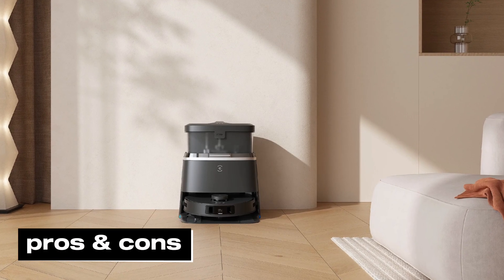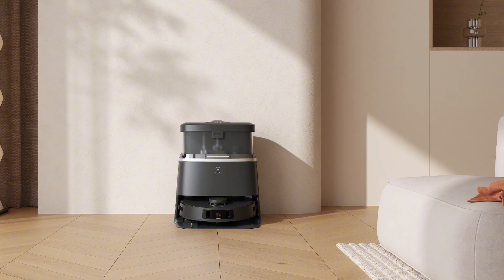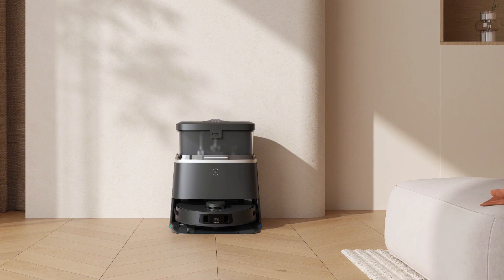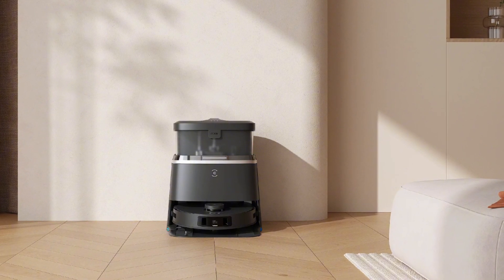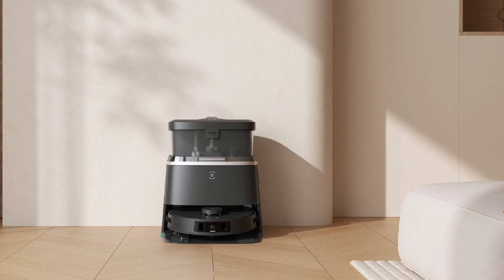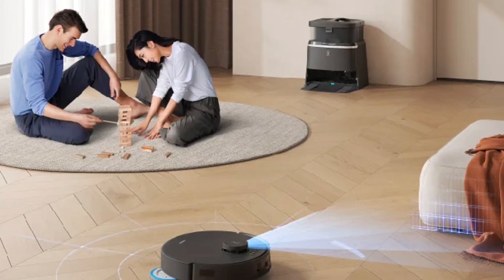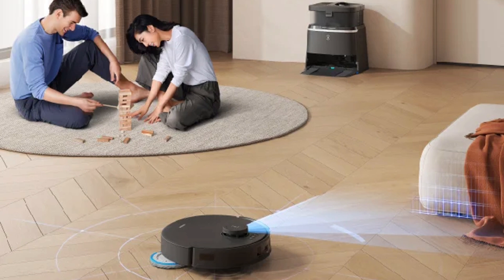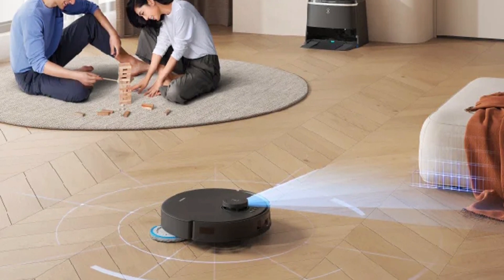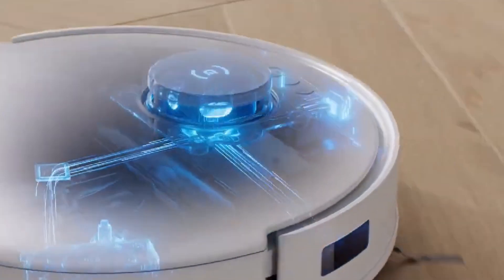Pros and Cons: As with any product, the Ecovacs D-Bot T30 robot vacuum has its share of pros and cons that are worth considering before making a purchase. On the positive side, its sleek and compact design allows it to effortlessly navigate under furniture and into tight spaces, making it an attractive addition to any home. The advanced navigation and mapping capabilities ensure that it cleans efficiently by systematically covering the entire area without missing spots. Additionally, the D-Bot T30 offers multiple cleaning modes, including auto, spot, and edge cleaning, providing versatility for different cleaning needs.